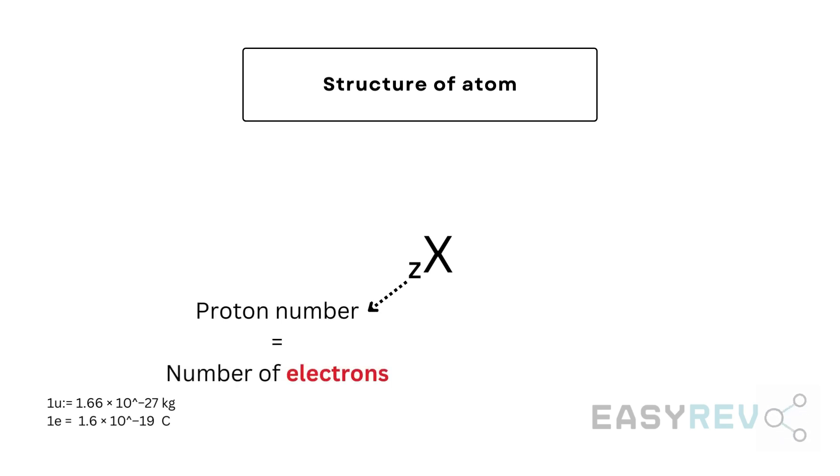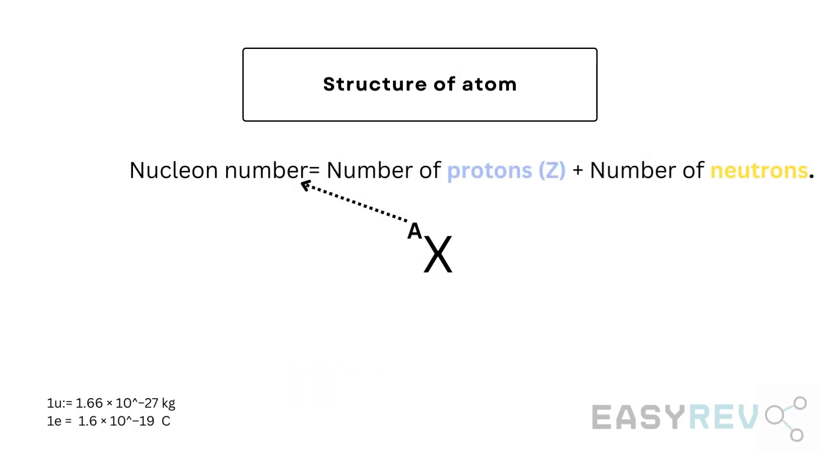A is the nucleon number, which represents the sum of protons and neutrons present inside the nucleus. In that case, it represents the total number of nucleons that are present in the nucleus.